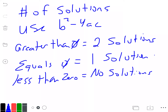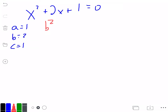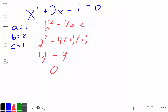For letter b, x squared plus 2x plus 1 equals 0. Find a, b, and c: a is 1, b is 2, c is 1. Plug into b squared minus 4ac: 2 squared minus 4 times 1 times 1, which is 4 minus 4, equals 0. Since b squared minus 4ac equals 0, the equation has one solution.